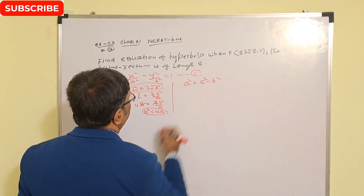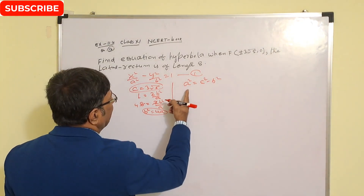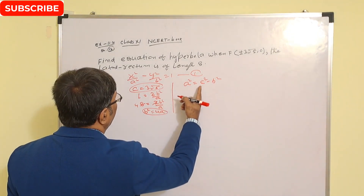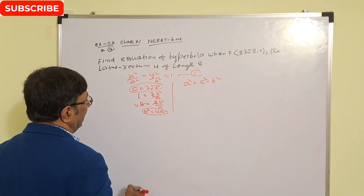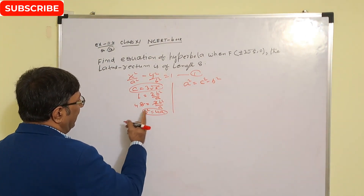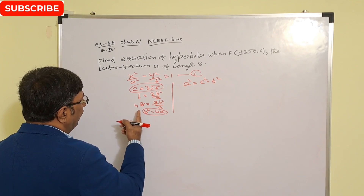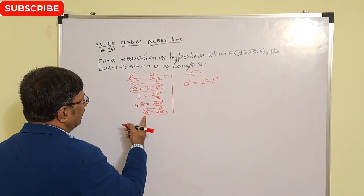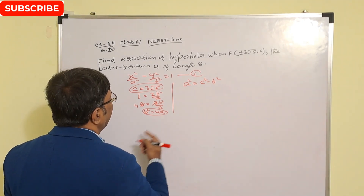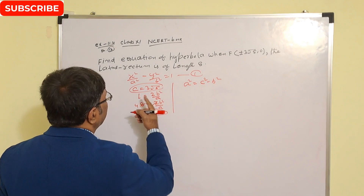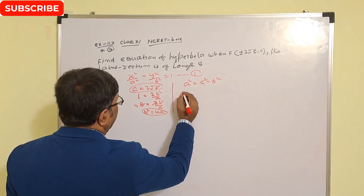Now we use the relation a² = c² − b². Substituting b² = 4a and c = 3√5, we get a² = (3√5)² − 4a.